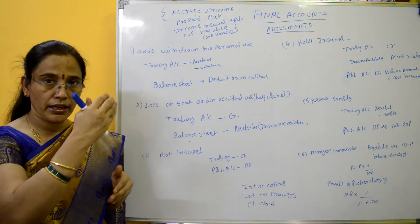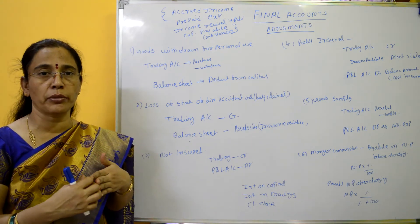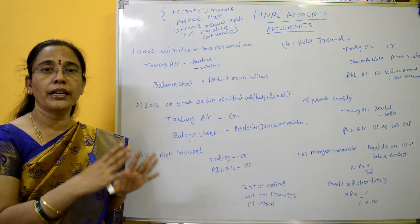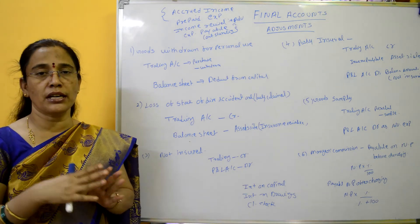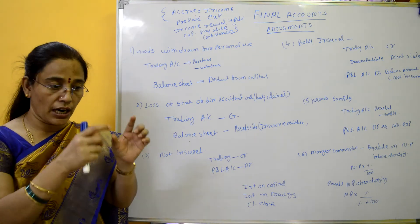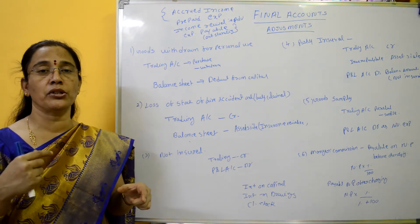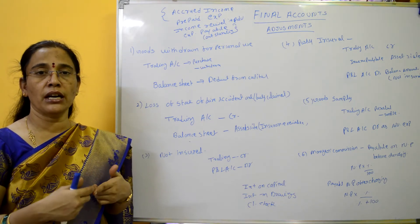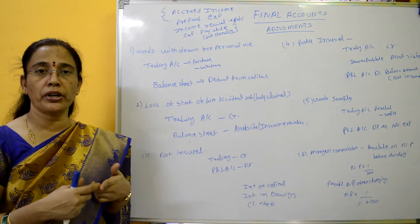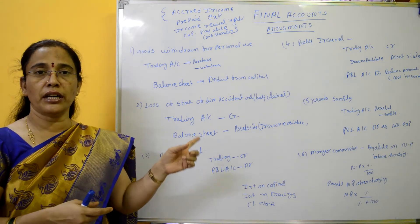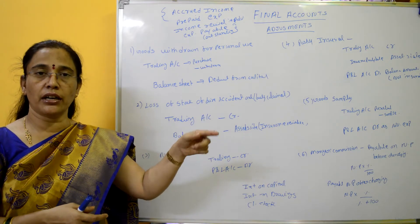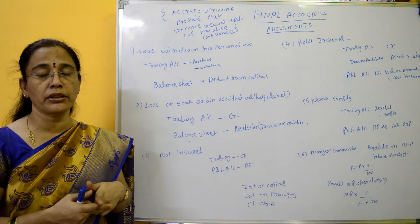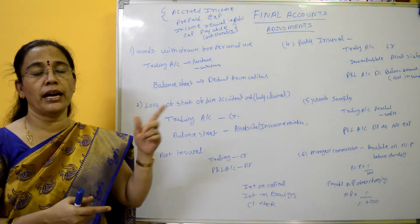We will receive the income of that particular year — revenue income and revenue expenditure. We will not consider the previous year. So we will receive the accrued income. Accrued income is added on the income side of the profit and loss account and shown as an asset on the balance sheet.